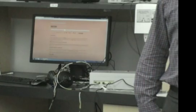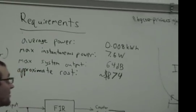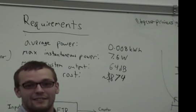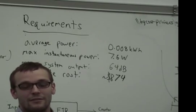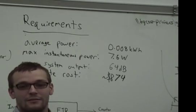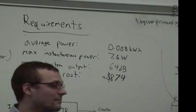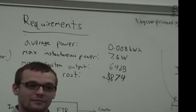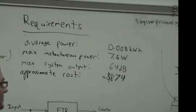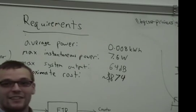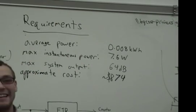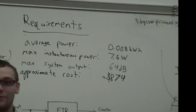The system must consume less than 0.3 kW on average. So it consumed 0.008 kW on average. And the system must not exceed a peak instantaneous power of 10 watts. It stayed at 7.6. It fluctuated down between 7.4 and 7.6 for over a 30-hour duration.